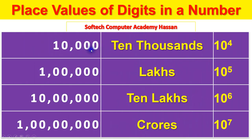Ones, tens, hundreds, thousands, ten thousands — that is 10 to the power of 4.